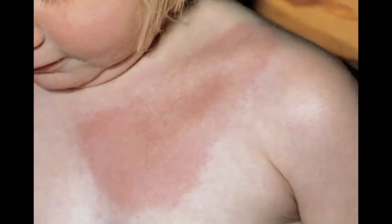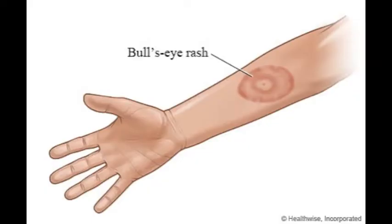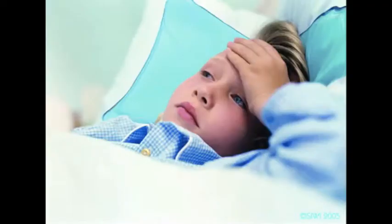Signs and Symptoms Stage 1: Early Localized Stage. After 3–30 days after the tick bite, the skin around the bite might become a rash. This rash is commonly called the bullseye rash. Along with the rash, the victim might feel headaches, fever, fatigue, or muscle and joint pain.